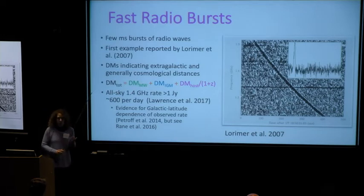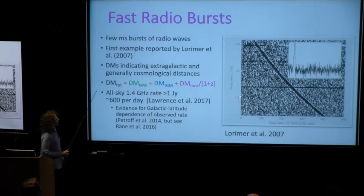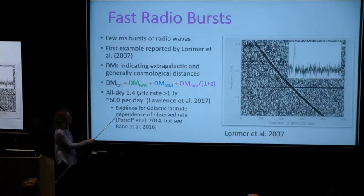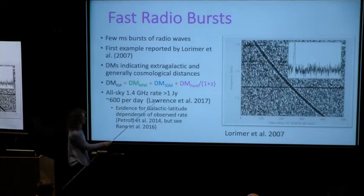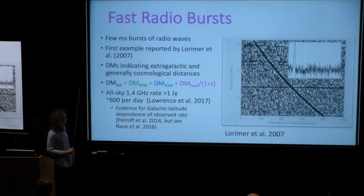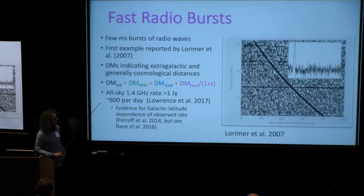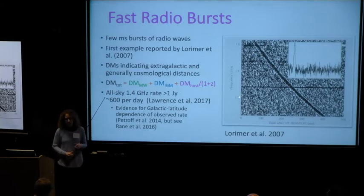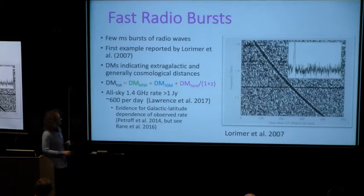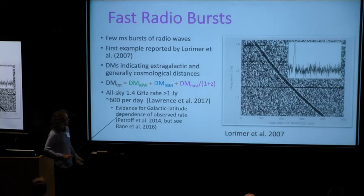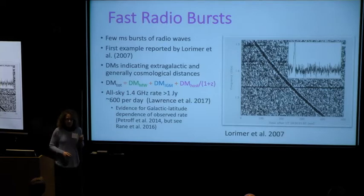These things are really common — and that's one of the reasons they're so interesting. At 1.4 gigahertz, you should always specify the frequency and the threshold, because those are crucial in stating a rate. Roughly speaking, about 600 per day is the estimated rate. This is not something uncommon; this is something the universe loves to do. It was a surprise, and it's ubiquitous. There's been some evidence for galactic latitude dependence of the observed rate, but that's still under discussion.